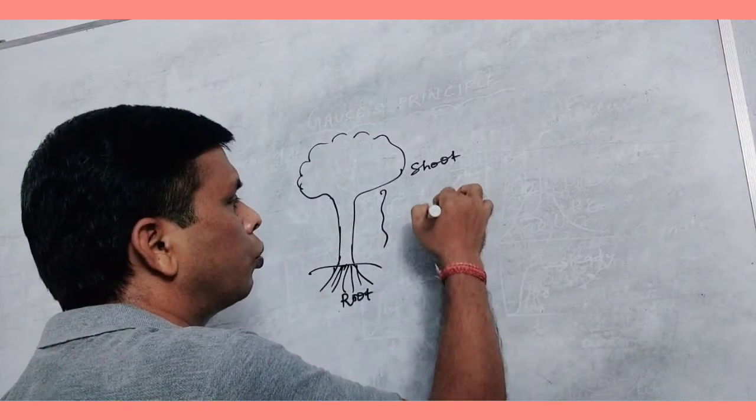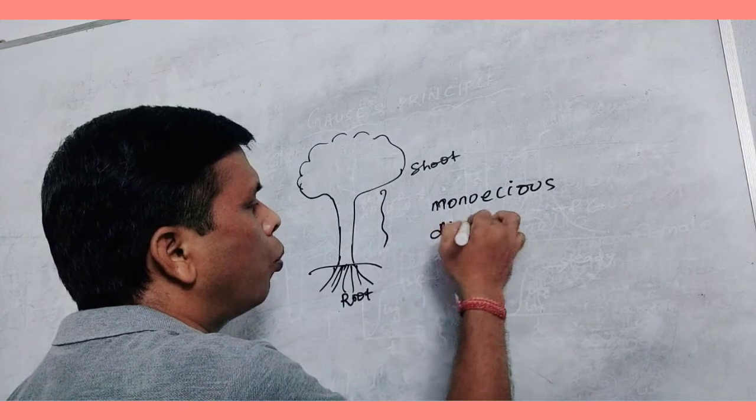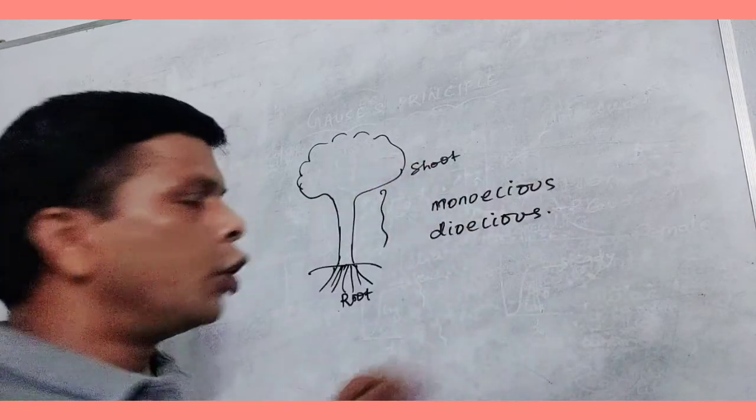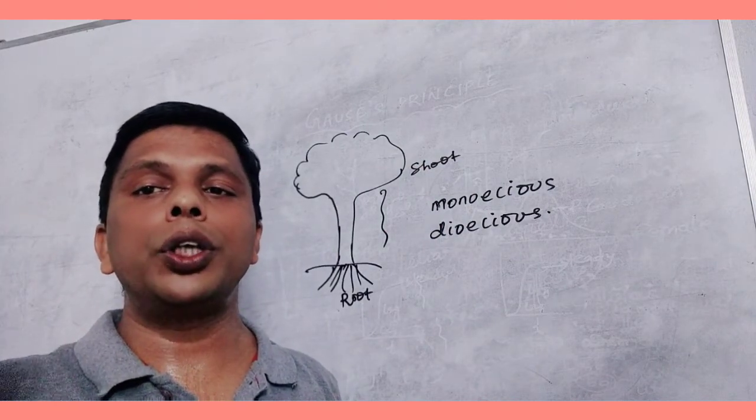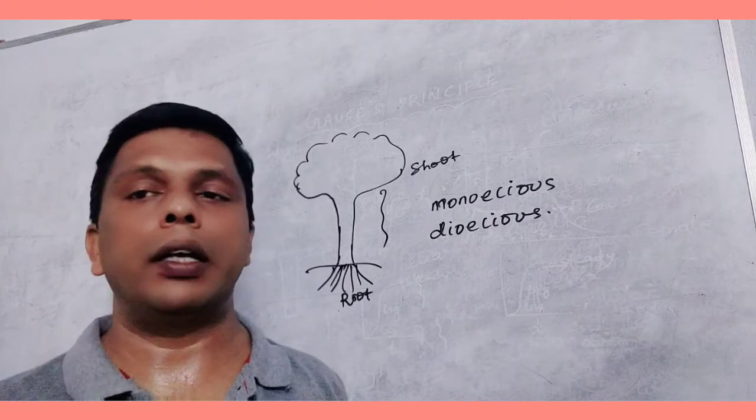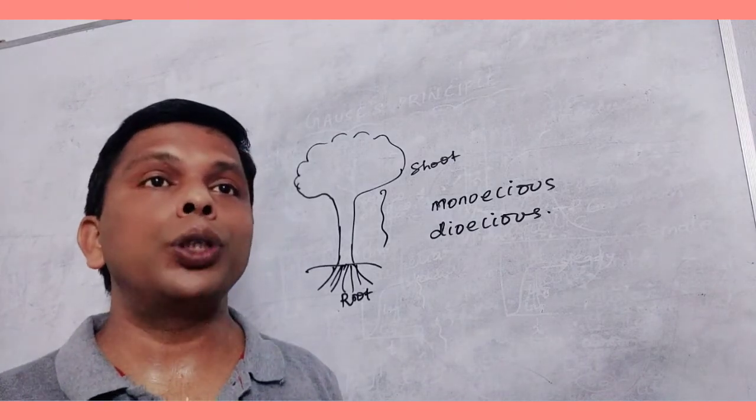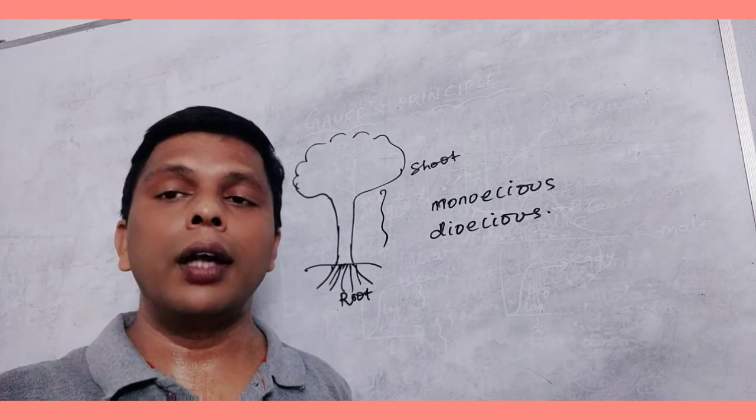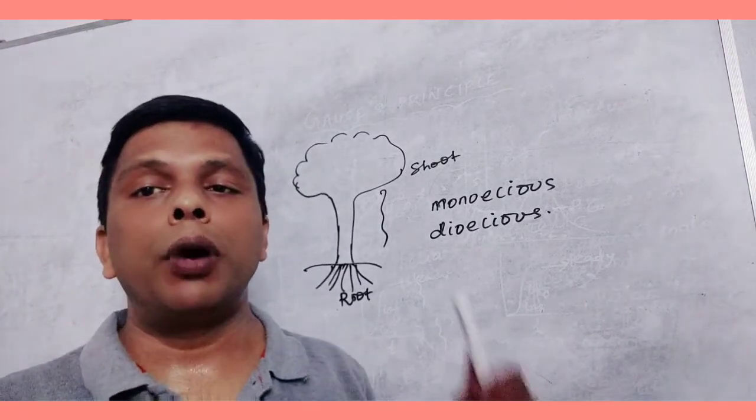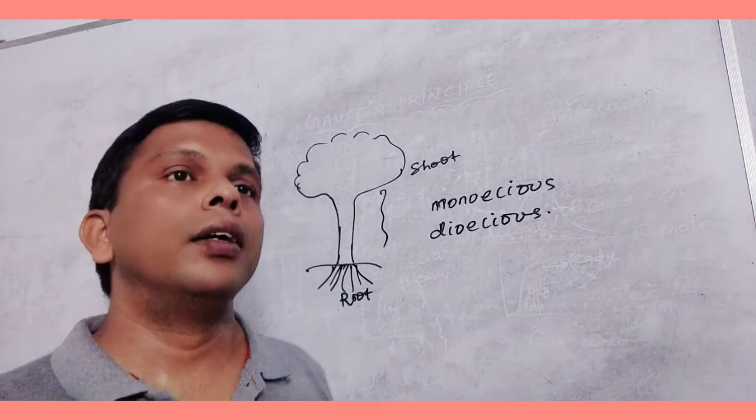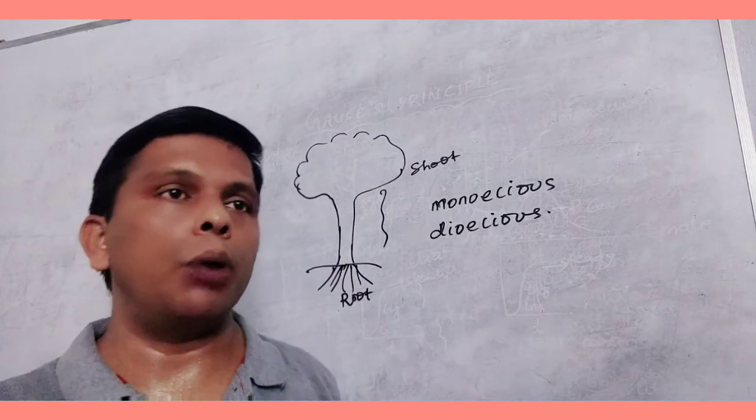Monoecious condition and dioecious condition. Monoecious means bisexual, when a single body consists of both male and female parts, it is called monoecious or hermaphroditic. Dioecious is otherwise called unisexual condition, when two different bodies are there for carrying male and female parts. The flowers may be monoecious or dioecious.